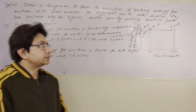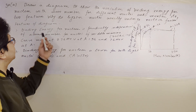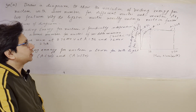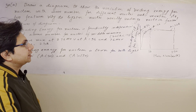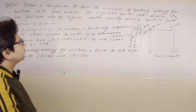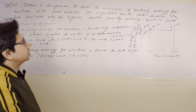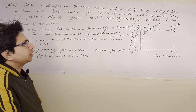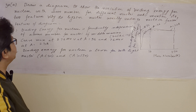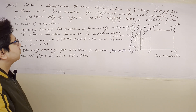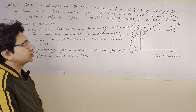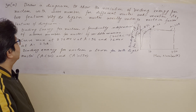Hello students. The question is: draw a diagram to show the variation of binding energy per nucleon with mass number for different nuclei and mention its two features. Why do lighter nuclei usually undergo nuclear fusion?